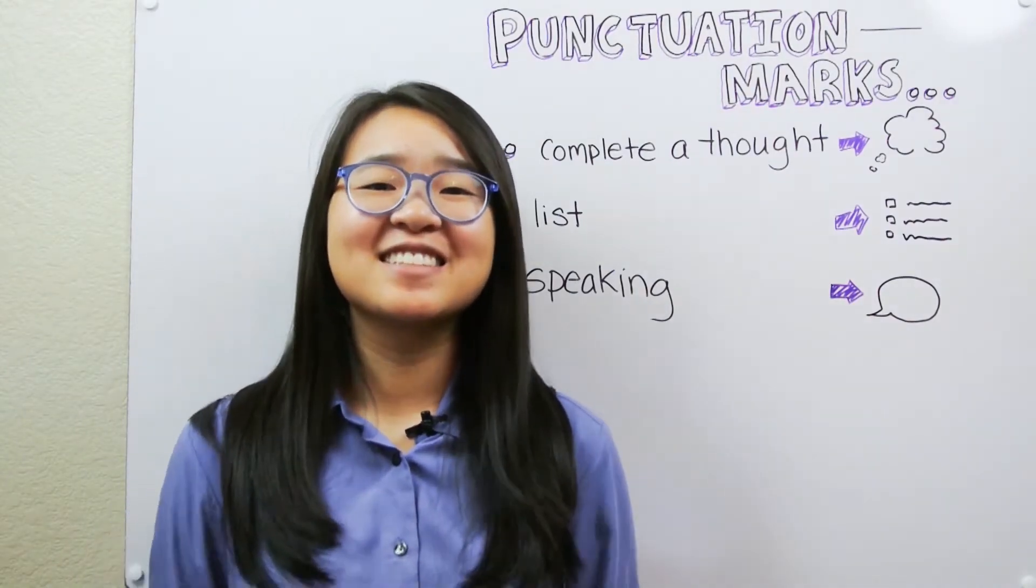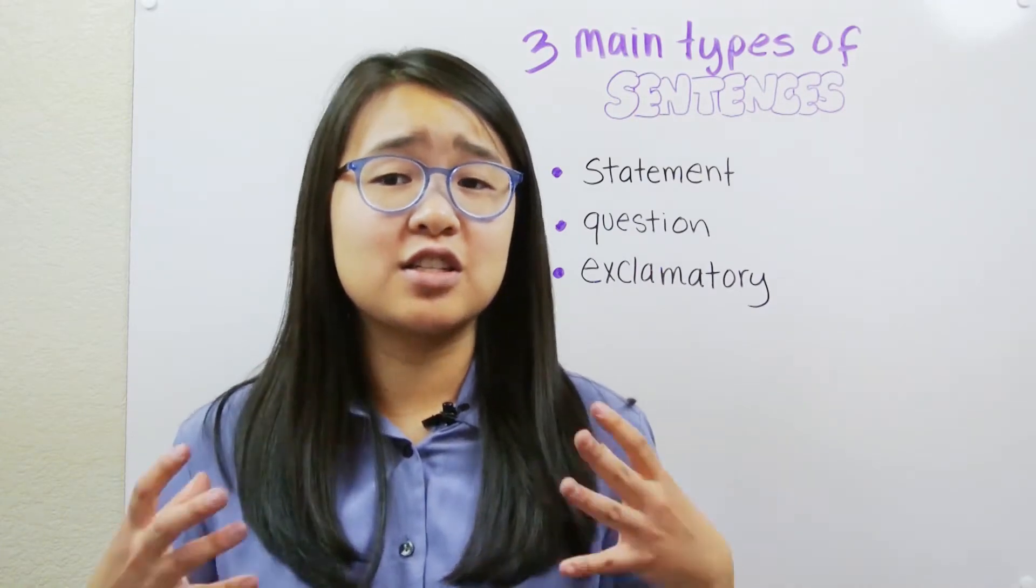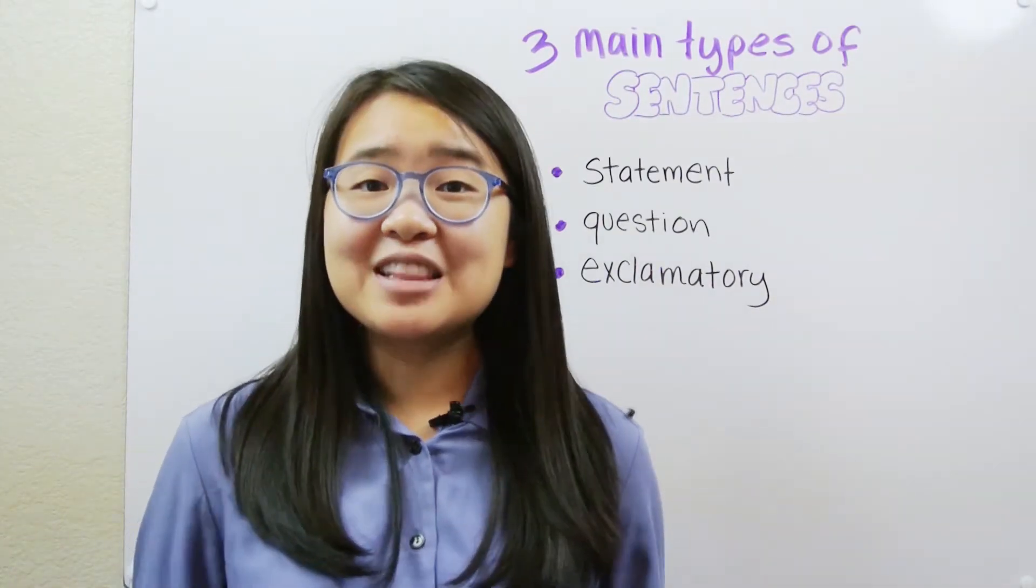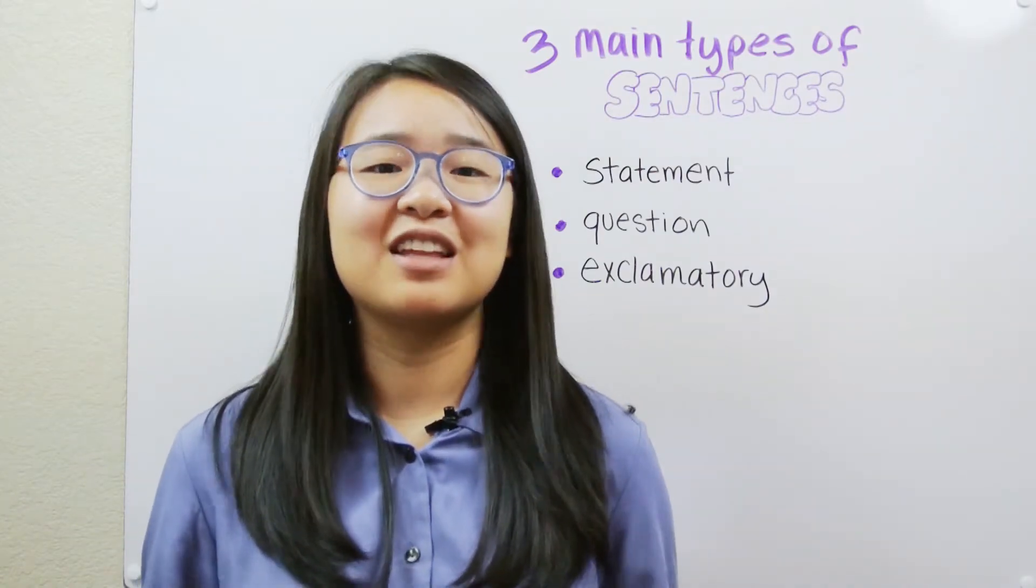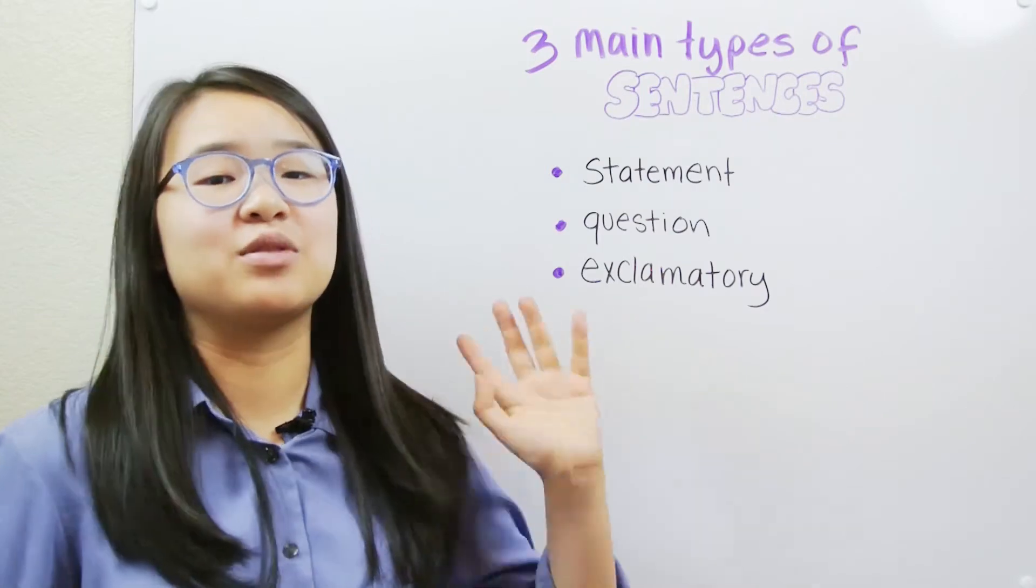Let's start with the basics. There are three main types of sentences and each type of sentence ends with a special type of punctuation. We'll look at these three types of sentences separately. They are a statement sentence, a question, and an exclamatory sentence.